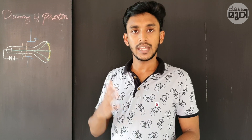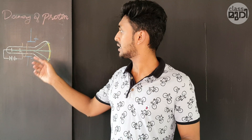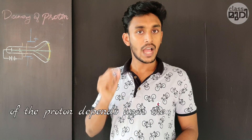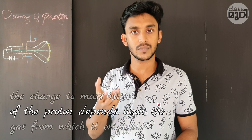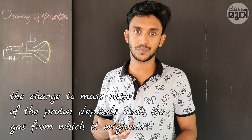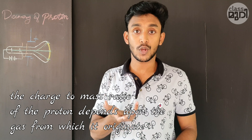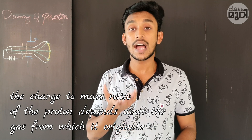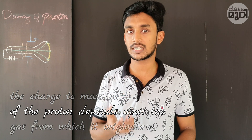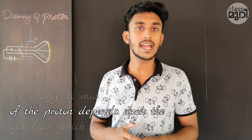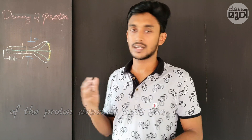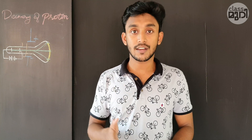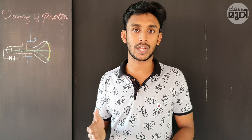So we can tell you about the properties of the proton in the electron context — it is dependent on the atom. This proton has a charge-to-mass ratio. The canal rays have properties related to the proton. The discovery of the neutron will be covered in the next video.